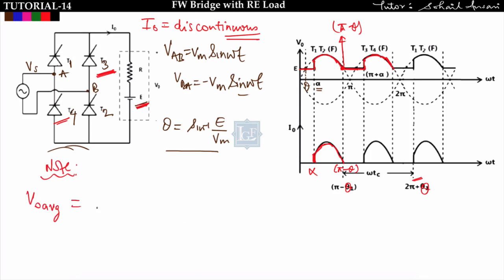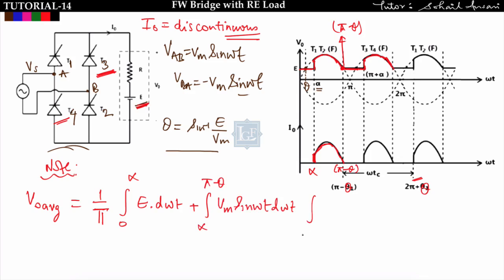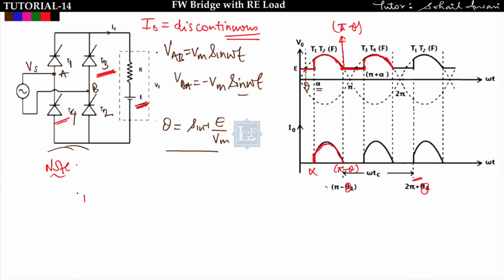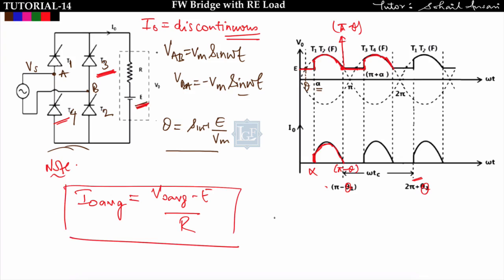For average output voltage, with time period π, we integrate over one cycle: from 0 to α, v₀ = E; from α to π−θ, v₀ = Vm·sin(ωt); from π−θ to π, v₀ = E. The result is: V₀_avg = (1/π)[Vm(cosα + cosθ) + E(π + θ)], where θ = sin⁻¹(E/Vm). Average load current is then: I₀_avg = (V₀_avg − E)/R.